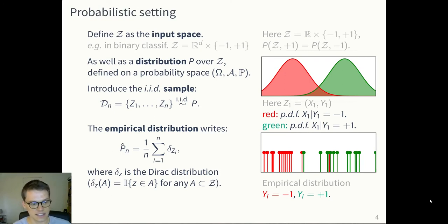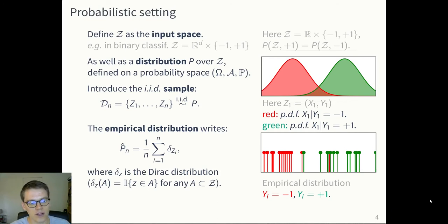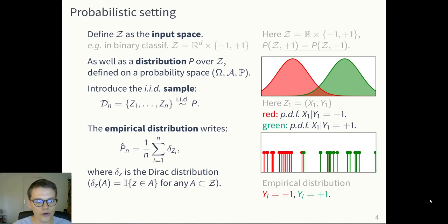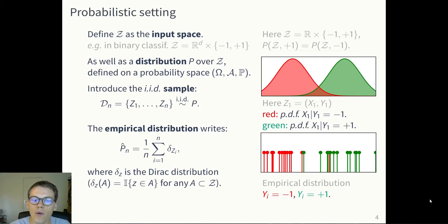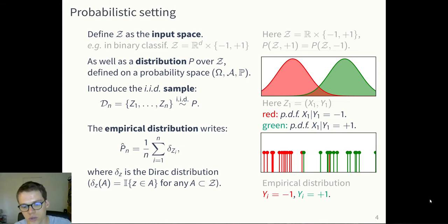From these instances, you can define an empirical distribution P_n using the Dirac distribution, which checks whether the element z is in the set A. On the right, you see a concrete example of this probabilistic setting where you have the distribution of the negatives and the distribution of the positives, and an empirical distribution on the bottom with some negative and positive instances.